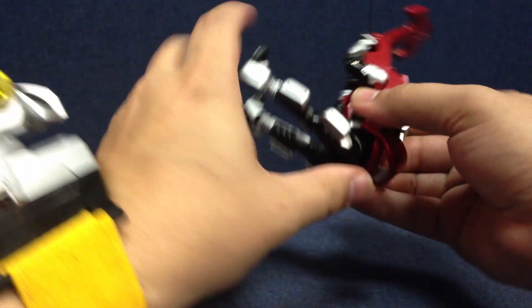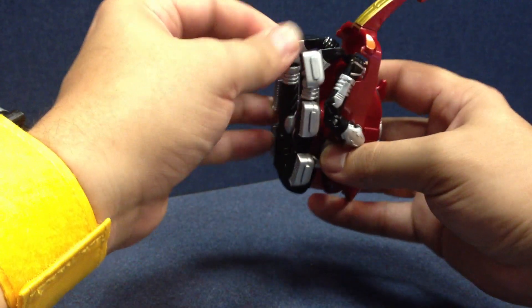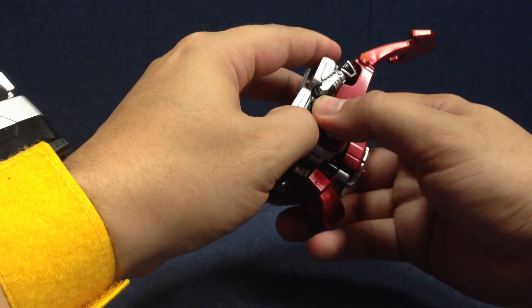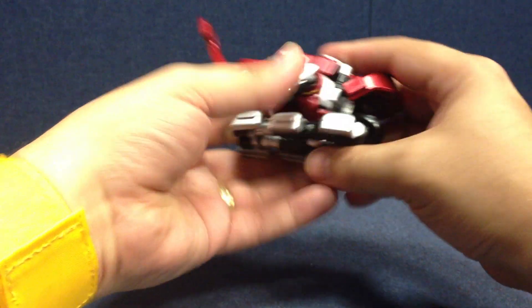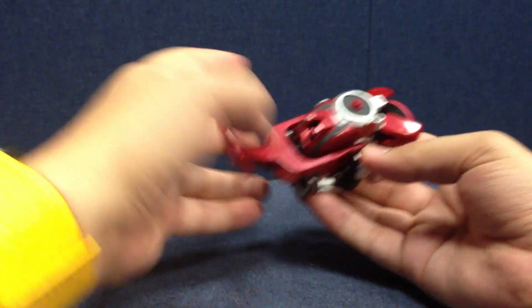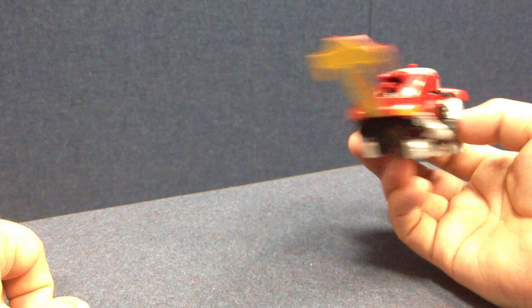You pull the waist down. The feet just kind of come up under here. They don't really peg into anything, they just kind of slide up. Slide up like that. Bring this piece down. Pull the little back wings out. And there is Kabuto as his Kabuto Zector.